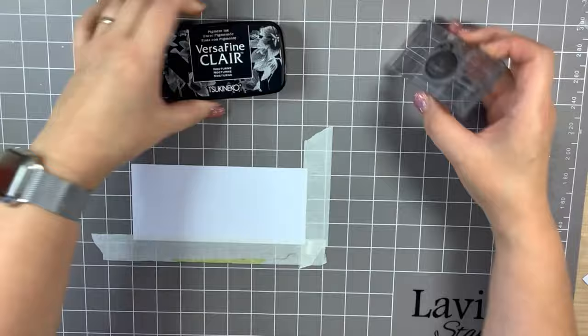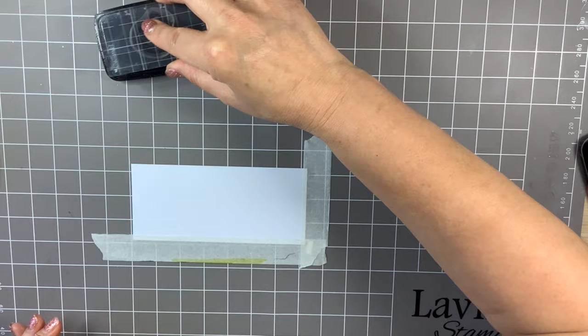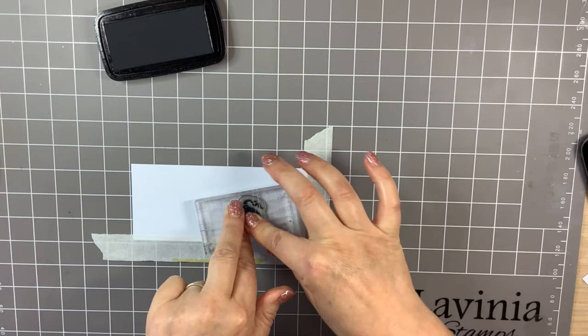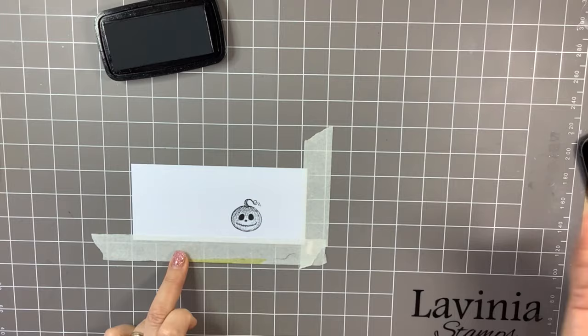Now I'm going to use VersaFine Clair in the Nocturne. I'm going to stamp my pumpkin just in from the side. That's probably about four centimeters.